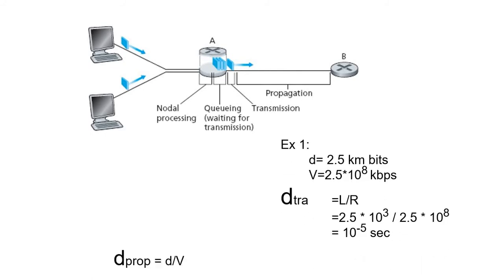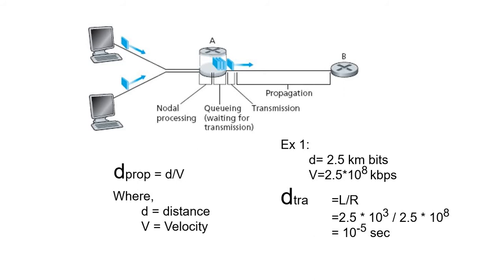For propagation delay, the equation is d / v, where d is distance and v is the velocity of the transmission medium. Velocity varies by medium — for optical fiber it is typically 2.1 × 10⁸ m/s, and generally ranges from 2 × 10⁸ to 3 × 10⁸ m/s depending on the cable type. When the question doesn't give you a velocity, use the velocity of optical fiber as the default.